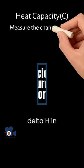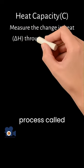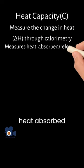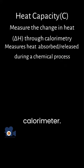Scientists measure the change in heat, delta H, in chemistry through a process called calorimetry that measures the amount of heat absorbed or released during a chemical process via the use of a calorimeter.